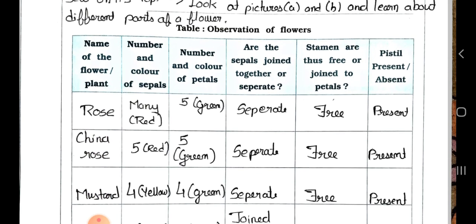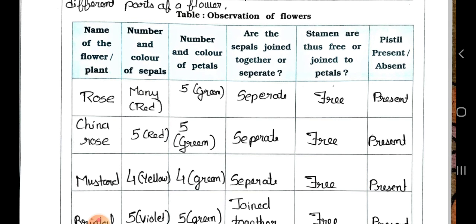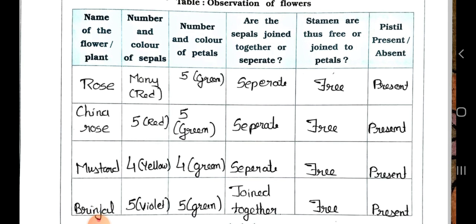See the observation table of flowers: name of the flower or plant, number and color of the sepal, number and color of petals, are the sepals joined together or separate, are the stamens free or joined to the sepal, and is the pistil present or absent. Now see the name of the flower: rose. Sepals are many and red in color. Petals are five, green.